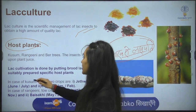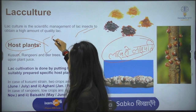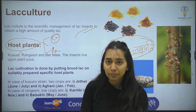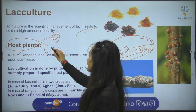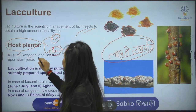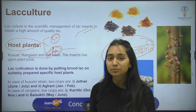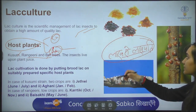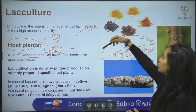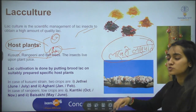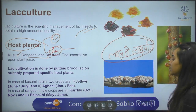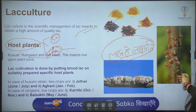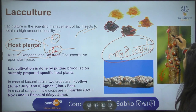For host plants, there are two strains — one is Kusumi and another is Rangeeni strain. Lac is finely ground and converted into different forms. A twig with brood lac is tied to a plant — this is called brood lac — and tied to a host tree.